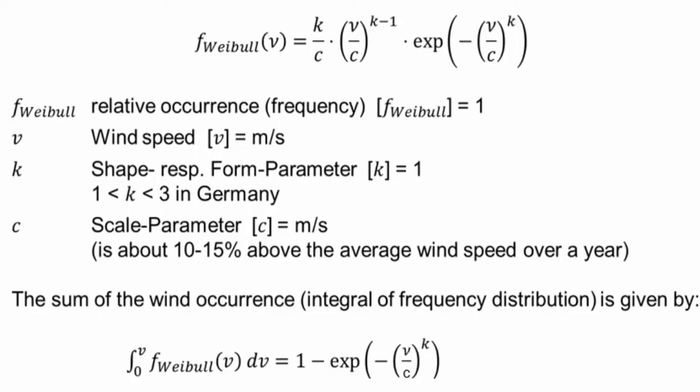You can also sum that up. So you have the sum of the wind occurrence — the integral of the frequency distribution. The formula changes slightly: you have the integral from zero wind speed to the actual wind speed of the Weibull function, and then you have as a function 1 minus the exponential function (v divided by c) to the exponent of k.